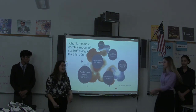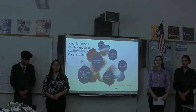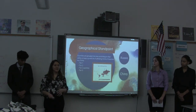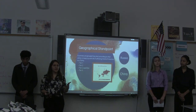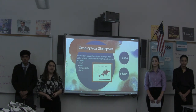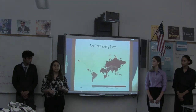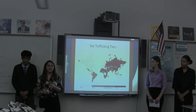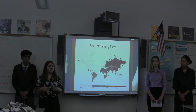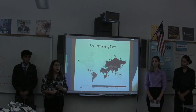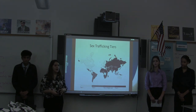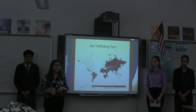Sex trafficking happens in multiple places worldwide. The U.S. Department of State releases a TIP — Trafficking in Persons — report in which each country is judged based on their efforts to combat modern-day slavery. Each country is placed into a tier: tier 1, tier 2, the tier 2 watch list, or tier 3. Tier 3 is the worst, as those governments do not meet the minimum standards or make significant efforts under the TVPA, the Trafficking Victims Protection Act.